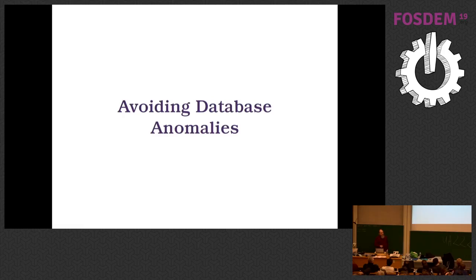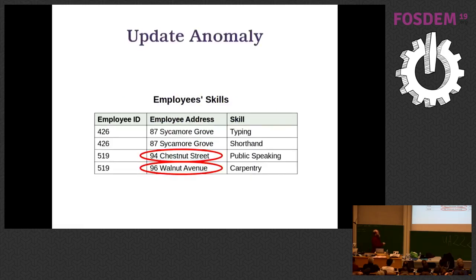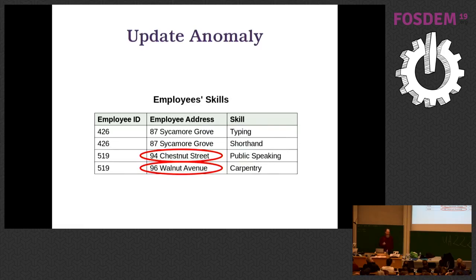The first goal of database modeling is to avoid anomalies. There are three kinds: insert, update, and delete. The update anomaly: this schema is wrong because in the same table we have the employee ID, their address, and a set of skills. But this employee apparently moved between when they learned one skill and now, so we have two entries in the database that disagree. Which is the correct address? We don't know — because the schema is wrong. The address should exist in only one place.